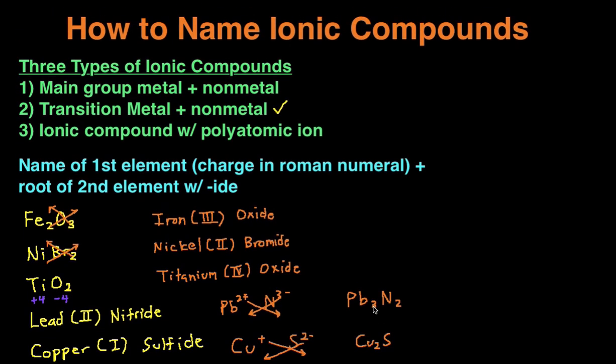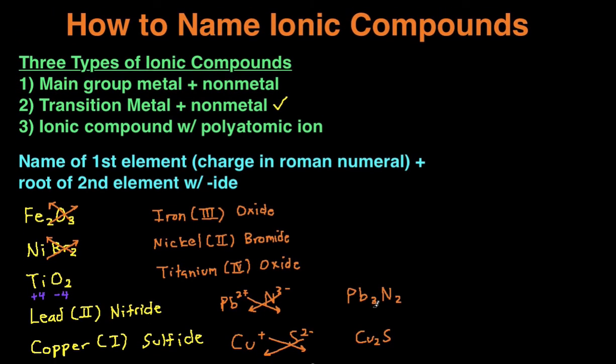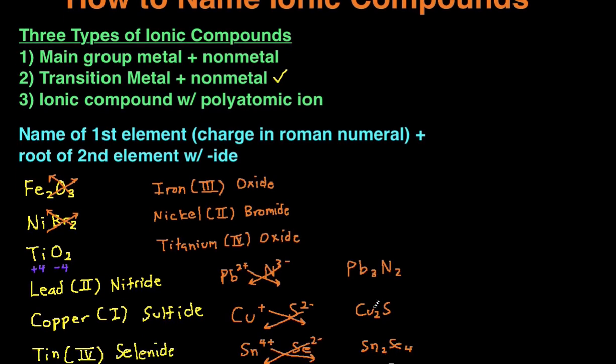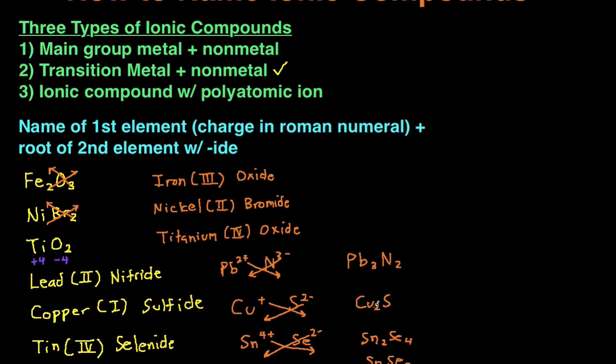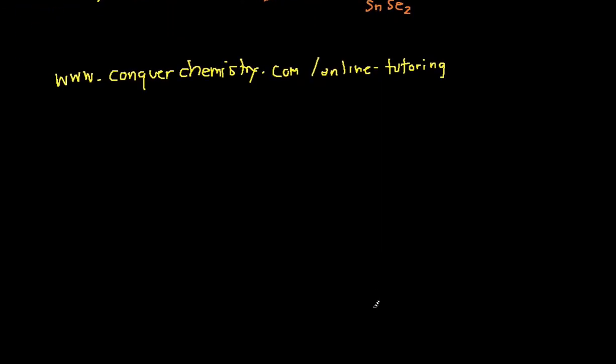And that's it. That's how you would name ionic compounds. That's how you would go from formula to name and name to formula if your ionic compound has a transition metal. Hopefully this clarified a lot of questions that you're having. And if this video helped, give me a thumbs up. Subscribe to the channel because I'll be posting a lot of videos that help you in this class. And if you like my teaching style and want individual tutoring, just check out www.conquerchemistry.com slash online tutoring. Keep practicing, and I'll see you next time.